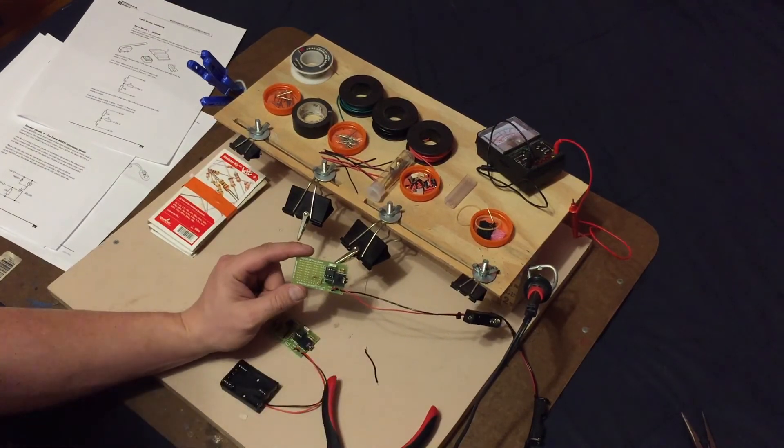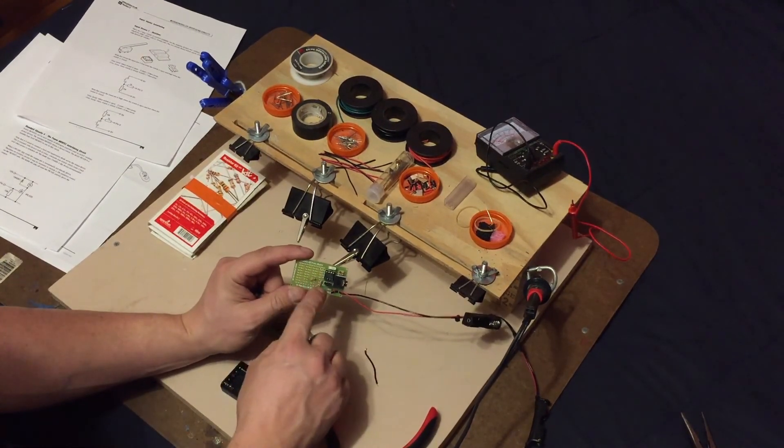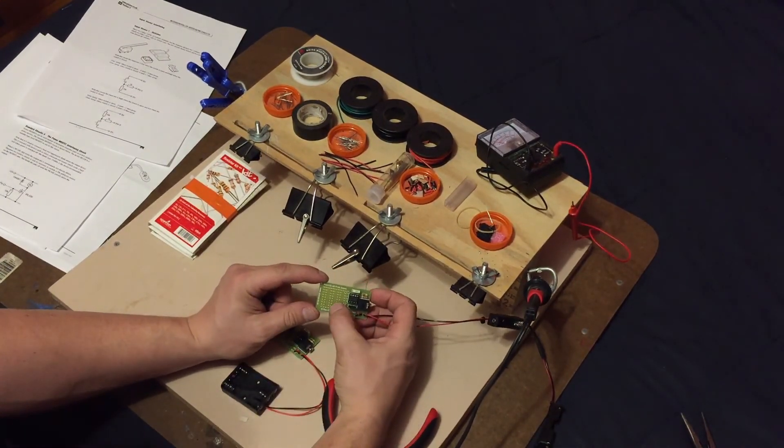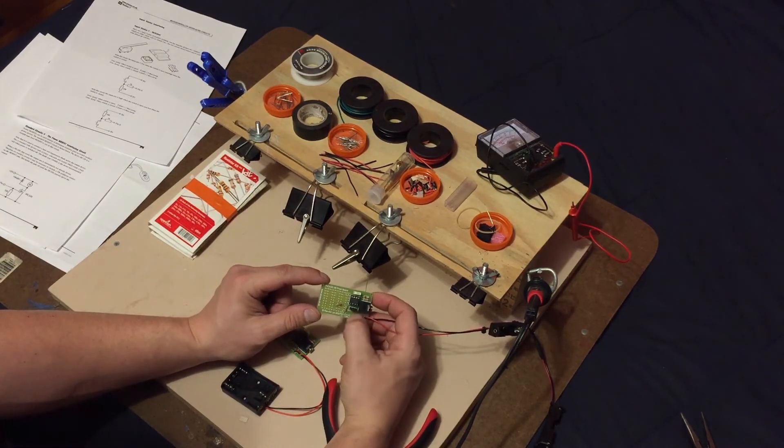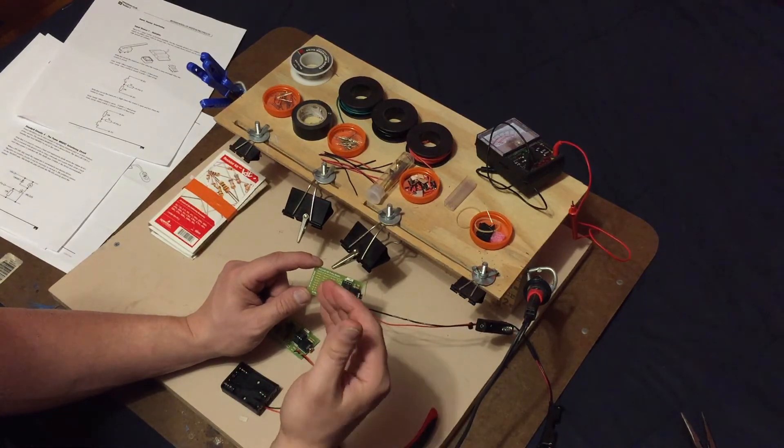But again, that's all it takes: those two resistors, 10k on the bottom here to 1k on the top. If you want a more electronic description of why they go there...